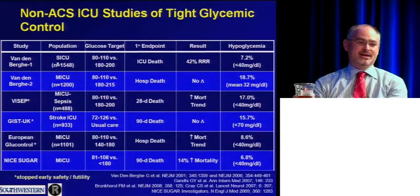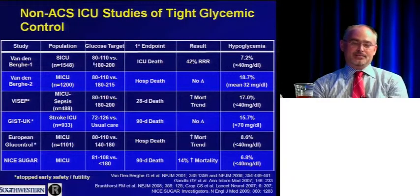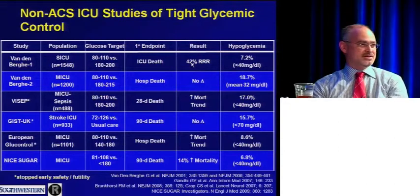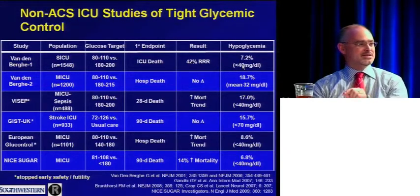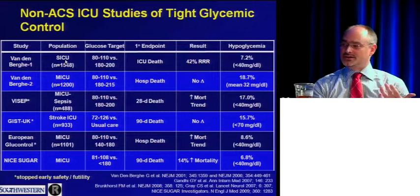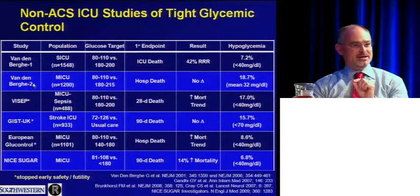Where have we looked if not in cardiology? In the surgical ICU. A single study published in 2001 — the SICU study from the Van den Berghe trialists in Leuven, Belgium — completely changed clinical practice worldwide. With a 1,500-patient population, they reduced major adverse clinical events including all-cause mortality by 40%, with a measurable but tolerable amount of hypoglycemia — about 7% of patients had glucose below 40.